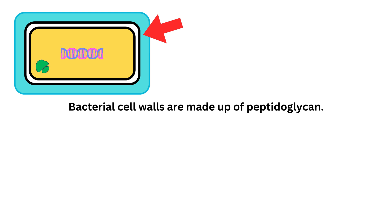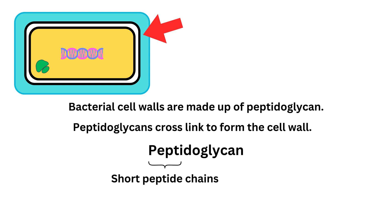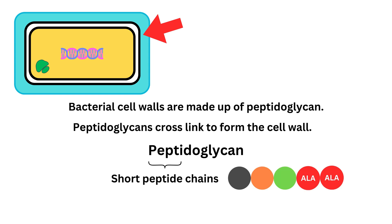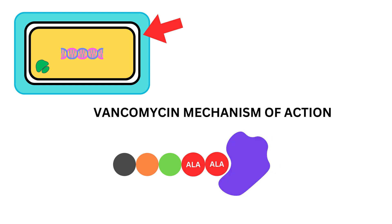Bacterial cell walls are made up of peptidoglycan. These peptidoglycans cross-link to form the cell wall of bacteria. Peptidoglycans are made up of short peptide chains. D-alanine-D-alanine are the amino acids that make up the terminal portion of this peptide chain. Antibiotics like vancomycin prevent the synthesis of the bacterial cell wall by binding to this portion and preventing peptidoglycan synthesis.